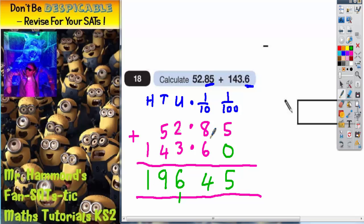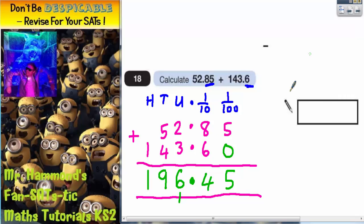The only thing that we need to do now is put a decimal point in. And all the decimal points need to line up. So a decimal point needs to go in there. So the final answer for your answer box is 196.45.